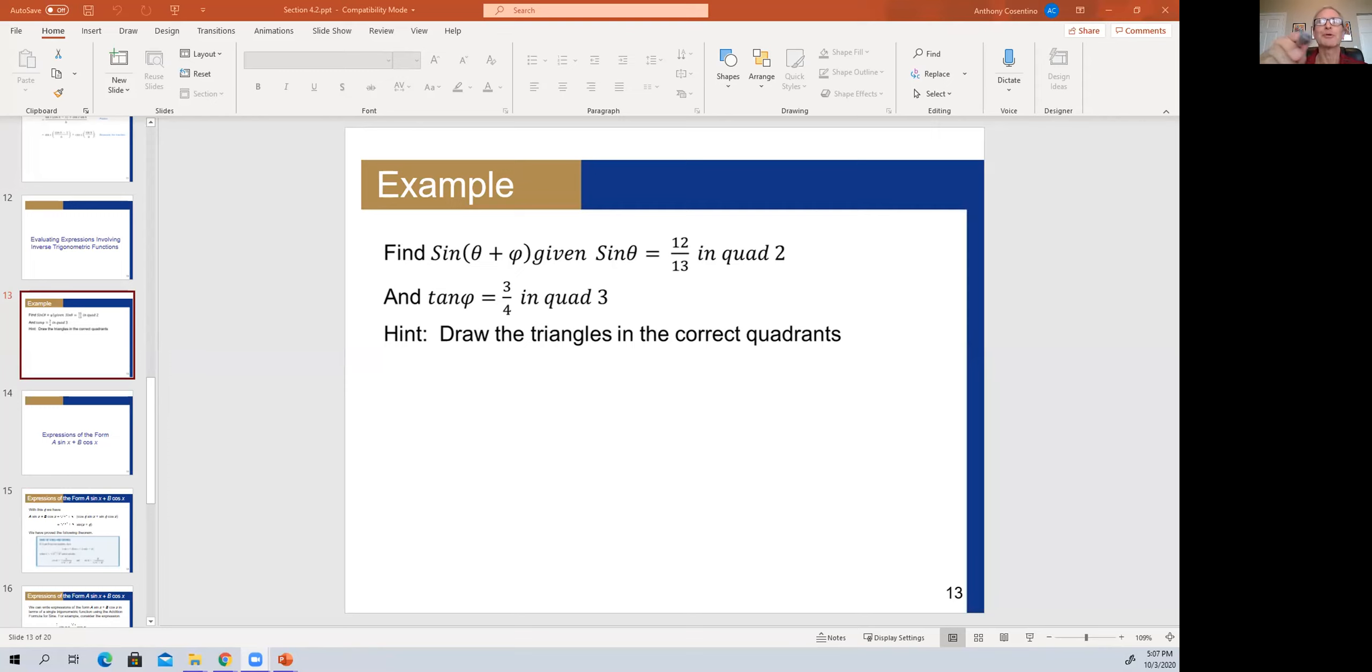So let me show you what I mean on the whiteboard. This one I think is definitely way more challenging than the first one. So here we have sine of theta equals 12 over 13 in quadrant two. Let's draw that one first. So if you do that one you're over here in quadrant two.